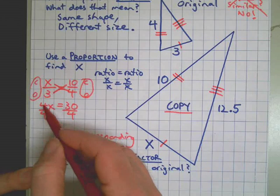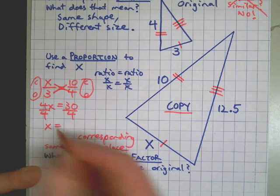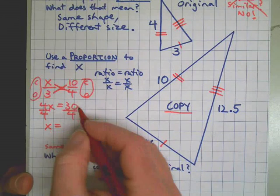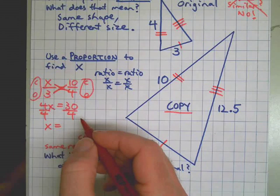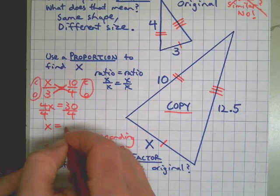Why? Because four divided by four is one, which leaves us with one X. That's our goal, is to have the variable isolated on one side. How many times does four fit into thirty? Well it fits in seven times, which gets me to twenty-eight, and then there's two left over. Two out of four is one half, so it fits in seven and a half times.